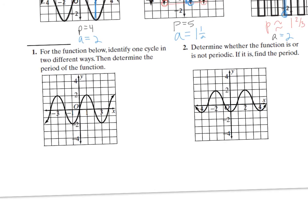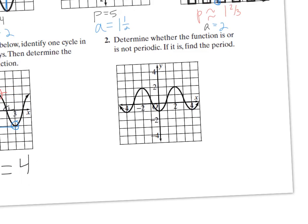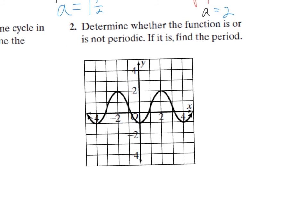For number one down here — for the function below, identify one cycle in two different ways. You can look at the cycle from these two spots, or from these two spots. There are many different ways. The period of this function is four — four units from here to here, four units from here to here. This last function is also periodic, and the period is four — from here to here, or from here to here.